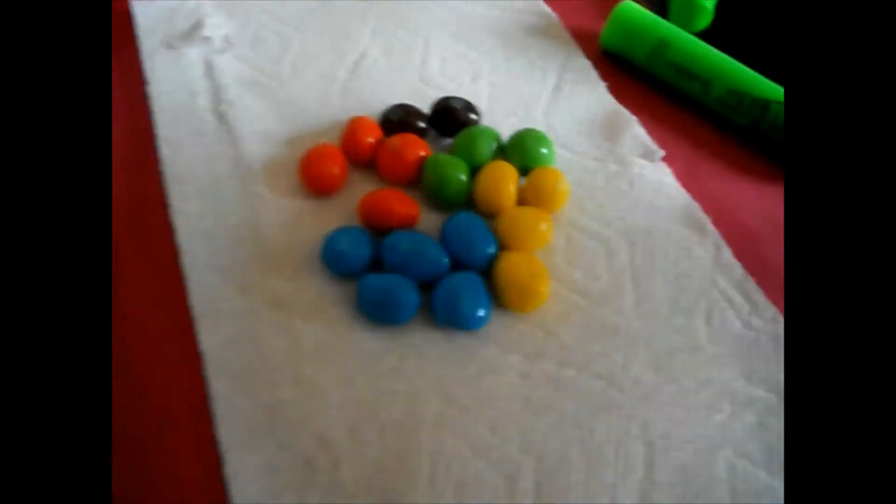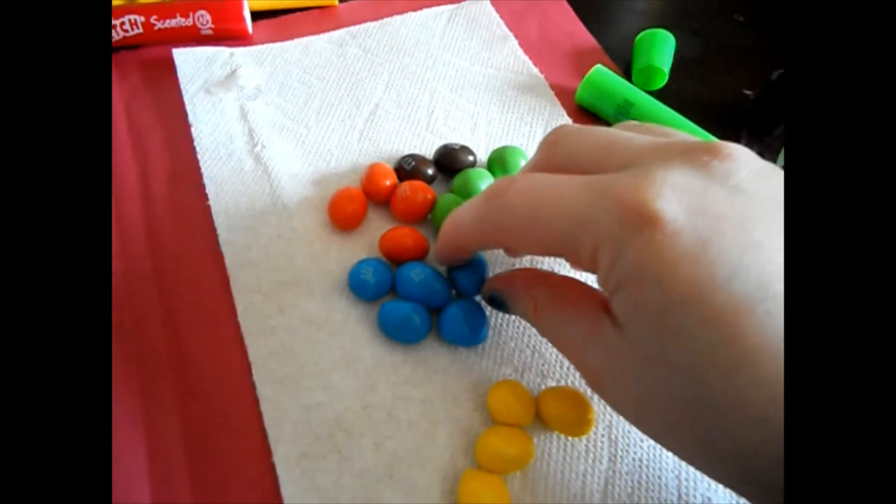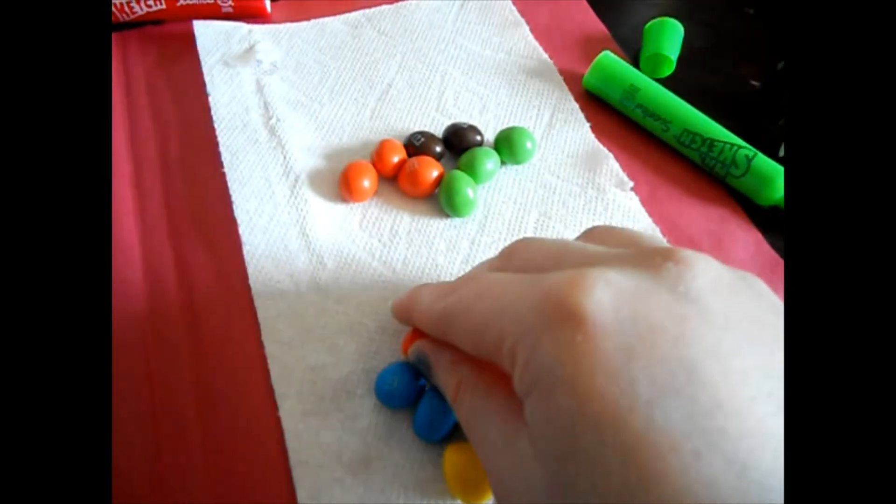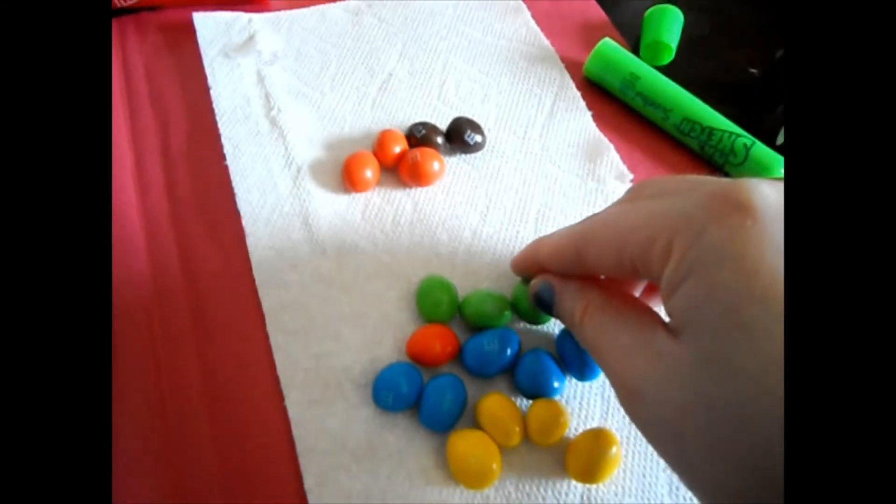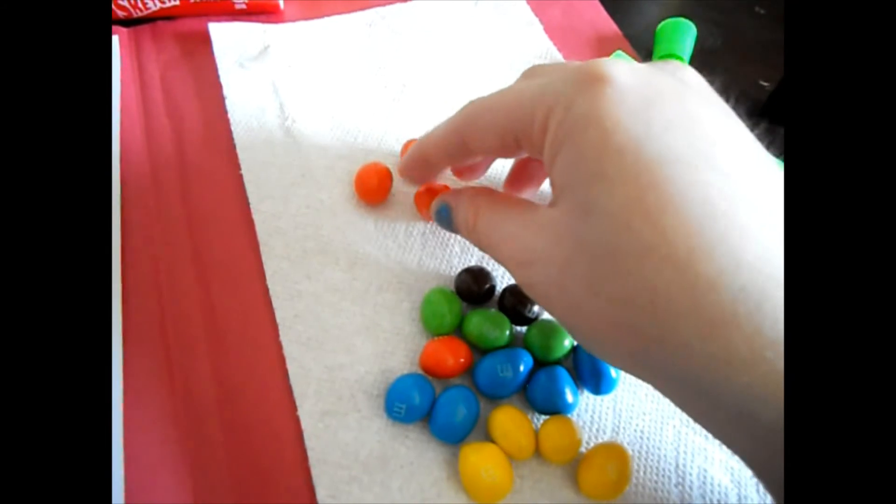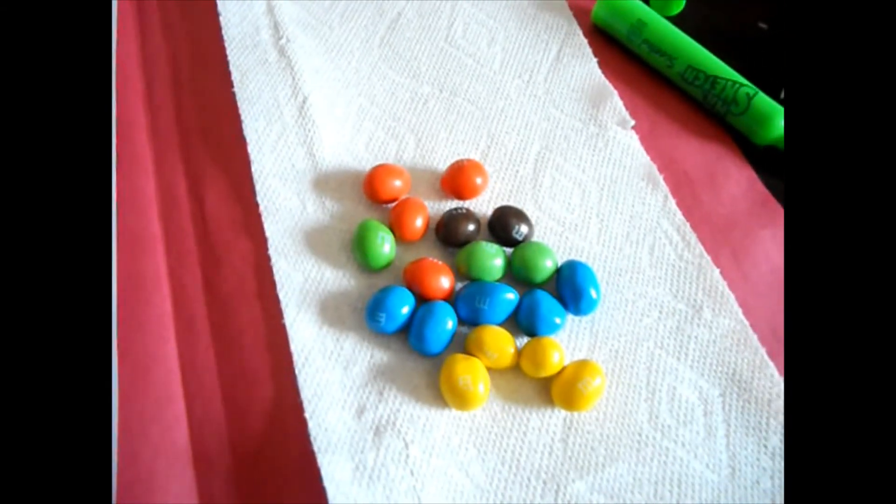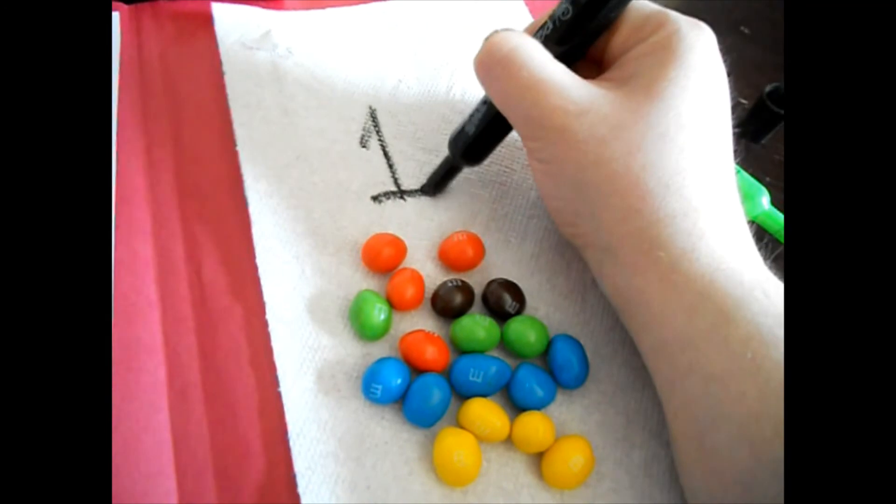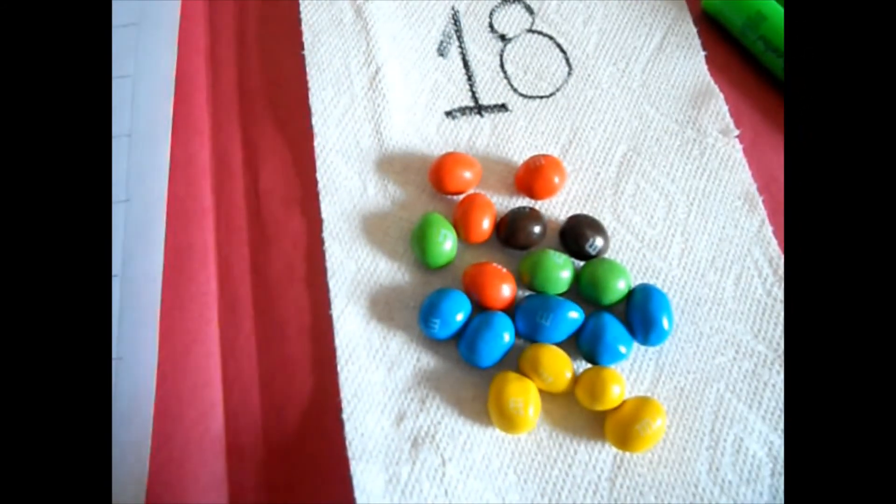And then you get to enjoy M&Ms. Actually have your child count all the M&Ms. So why don't we do that and then that will be it. Ready? So 1, 2, 3, 4, 5, 6, 7, 8, 9, 10. That's a lot of counting. 10, 11, 12, 13, 14, 15, 16, 17, and 18. 18 M&Ms. That's a lot. And 18 looks like this. It's a 1 first. And a number 8. That's number 18. Enjoy. Bye.